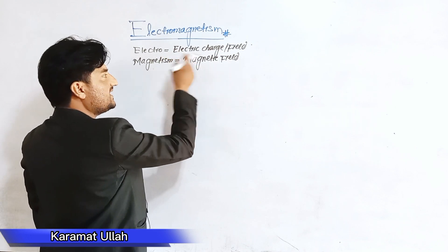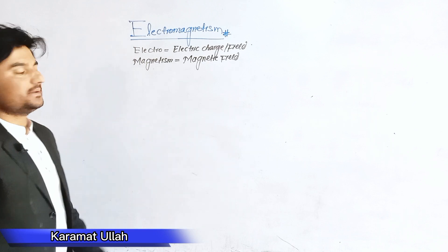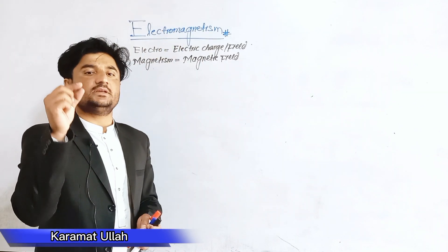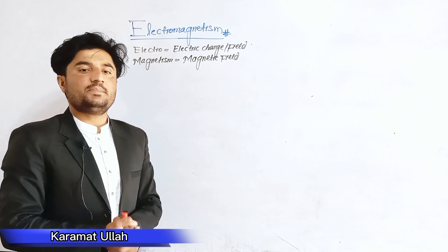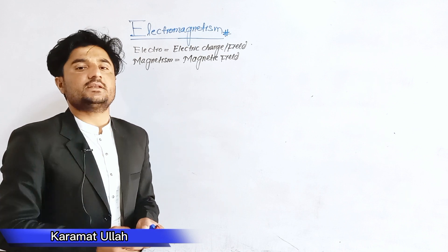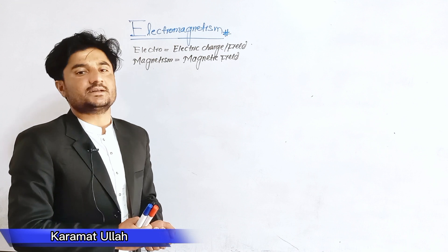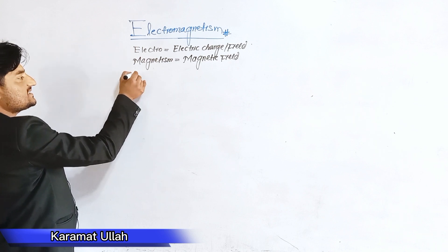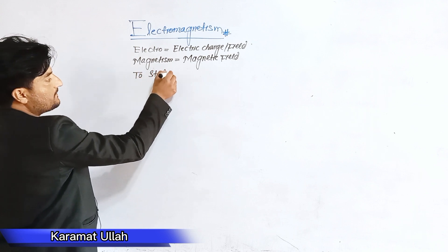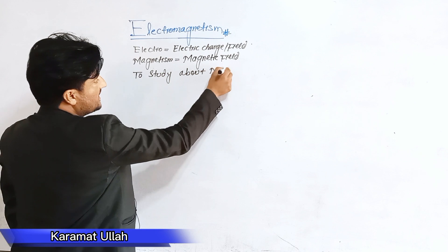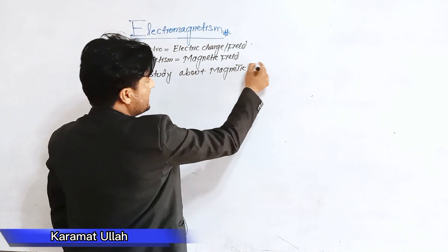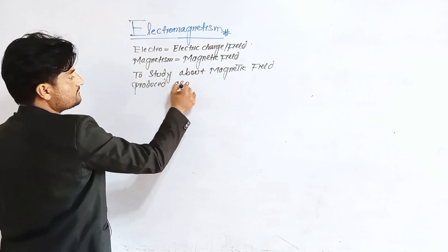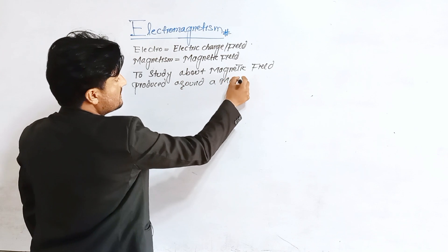Magnetism refers to the magnetic field produced by this phenomenon. So in this chapter, Electromagnetism, we define it as the branch of physics in which we study the magnetic field produced around a moving charge.